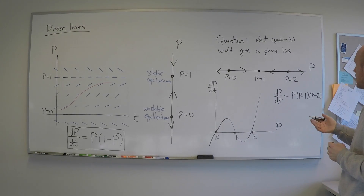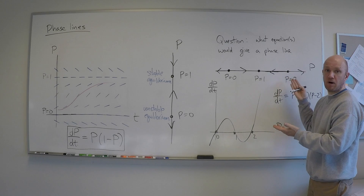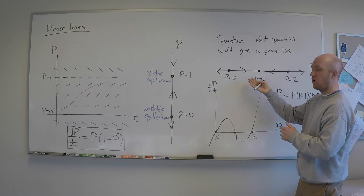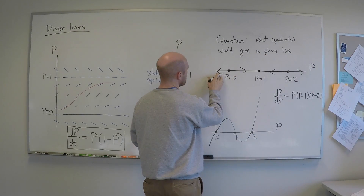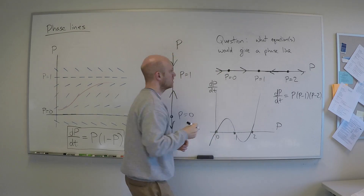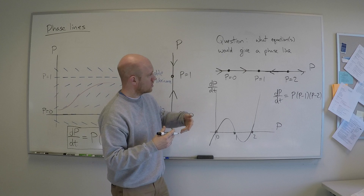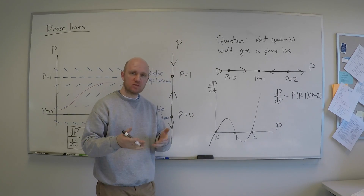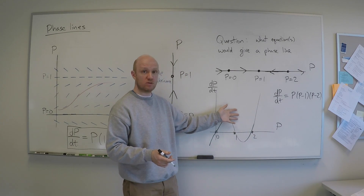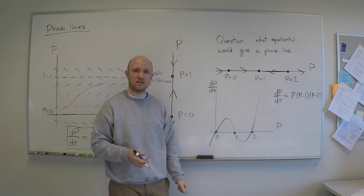One thing we could do is modify this a little bit. I invite you to try making a modification — for instance, you could insert another equilibrium, or take one of the arrows and turn it around so the direction changes. Then construct some examples, making sure you have a good handle on how the phase line comes from the equation and how you can move between the rate function graph and the phase line.